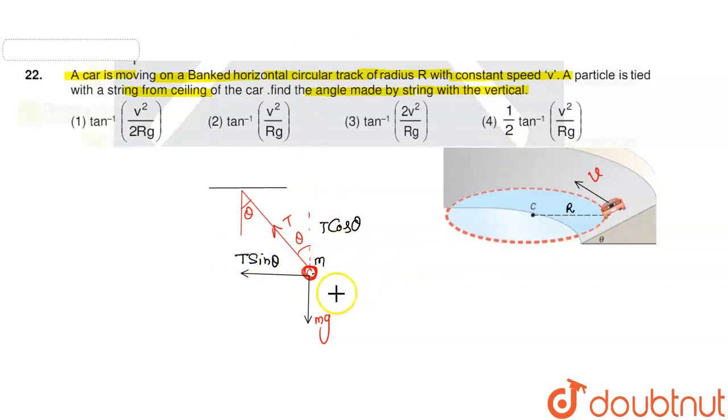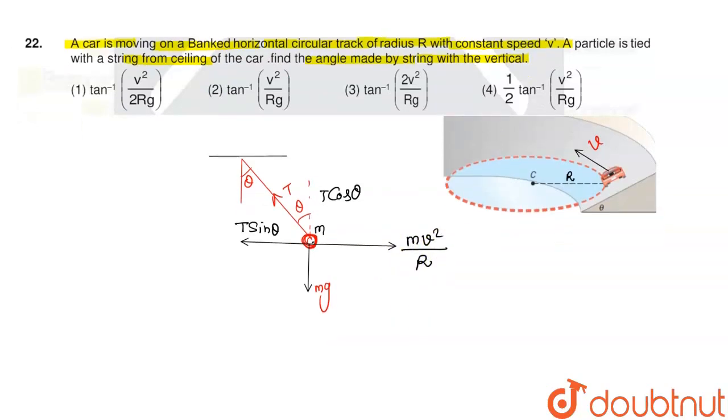Now the car is moving in a circle, so T sin theta provides the centripetal force for circular motion. The centripetal force equation is T sin theta equals mv² divided by R. And for vertical equilibrium, T cos theta equals mg.